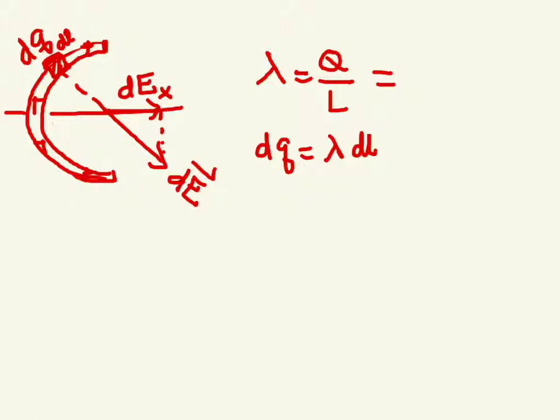And the charge density, lambda, is the total charge Q divided by the length. And the length is one half the circumference, right? So you can write it as pi times R. OK, so we've got the lambda. So using that, we can write down the DQ as charge density times the length element DL. And if you're wondering whatever variable here is, we'll get to that in just a moment.